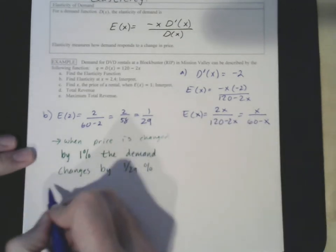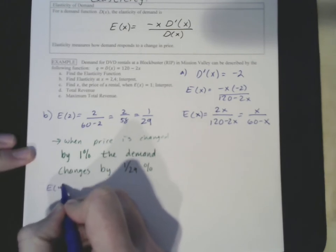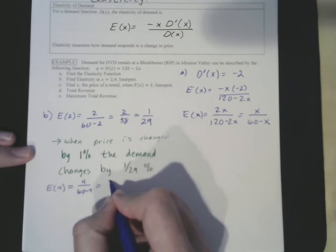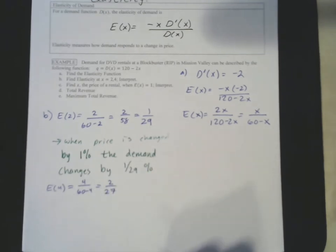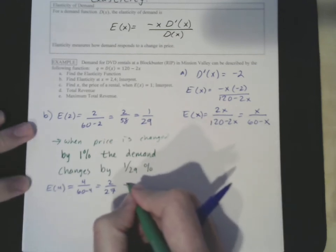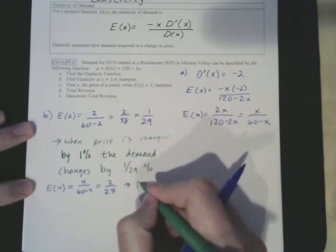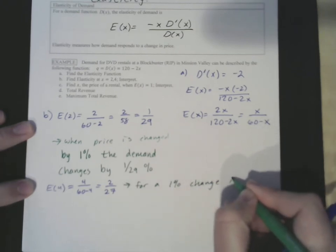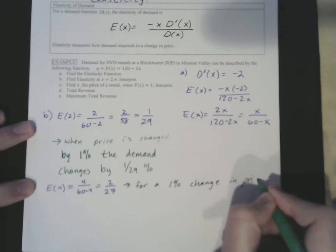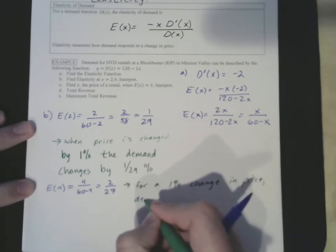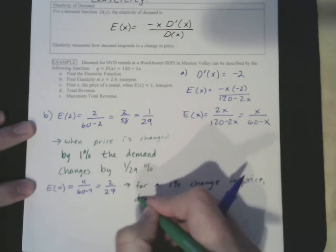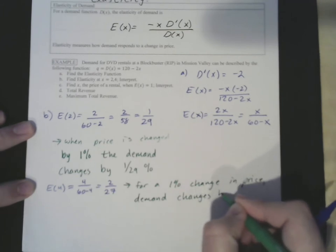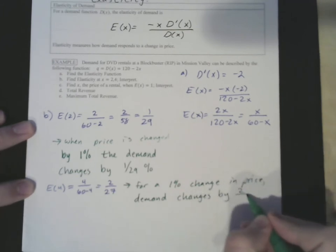For e(4), this is 4 over 60 minus 4, or 2 over 27. This means exactly the same thing: for a 1% change in price, demand changes by 2/27 of a percent.